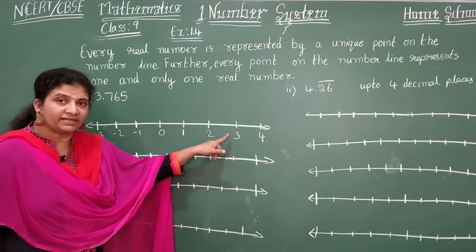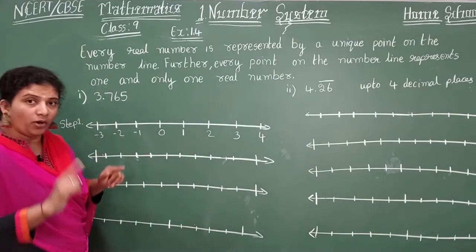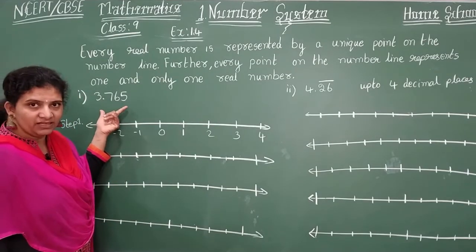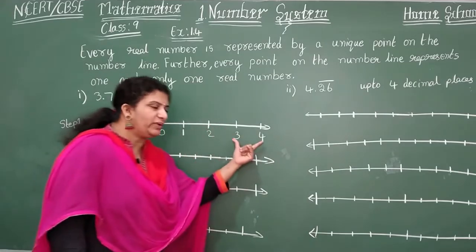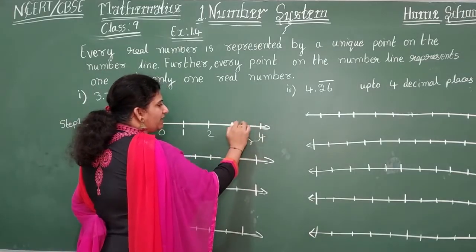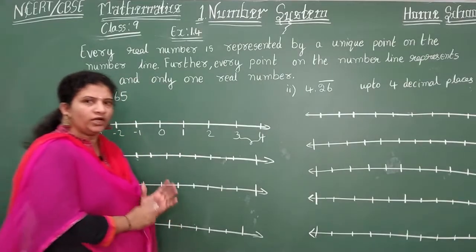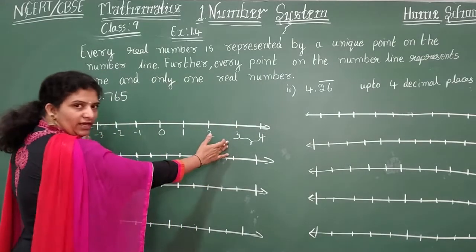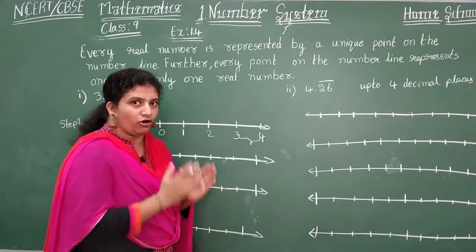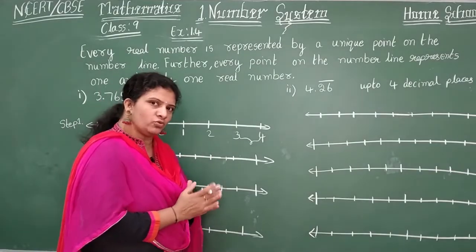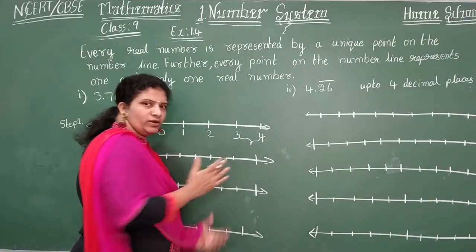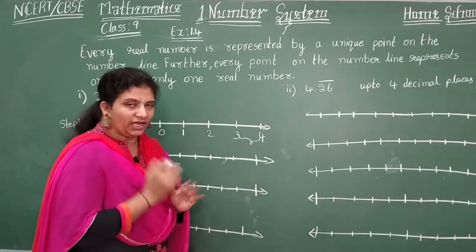Where does this 3 appear on the number line? It's not exactly 3. 3.765 means you need to understand — this decimal you are going to get in between 3 and 4. So your number line decimal part will be in between 3 and 4. You don't need beyond that, so you need only this part to be expanded or magnified — zoom in on this section.